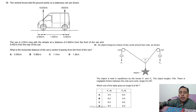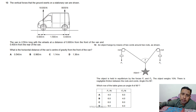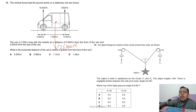Question 13: a van is 2.50 m long. Tyre centres are 0.60 m from the front and from the rear. Two upward forces act on the tyres: 16,000 N (front) and 9,000 N (rear). The total weight of the van is their sum: 25,000 N acting downward.